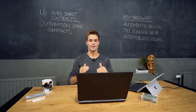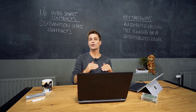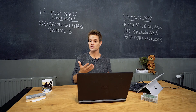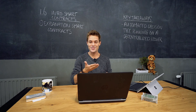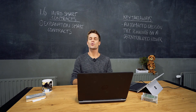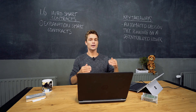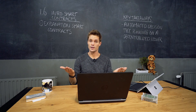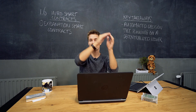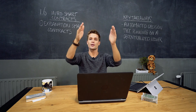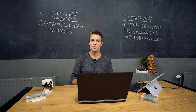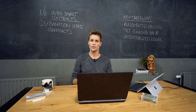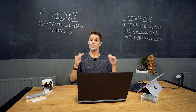The general objectives of a smart contract design are to satisfy common contractual conditions — meaning both parties agree on outcomes based on specific events. For example, in a soccer match: if party A wins, money goes to A; if party B wins, money goes to B; if it's a draw, it goes to both sides.